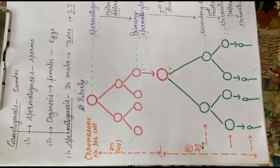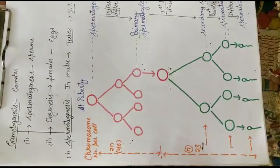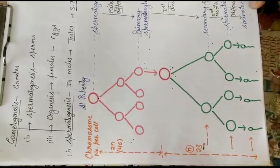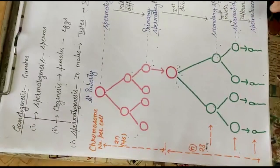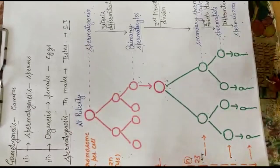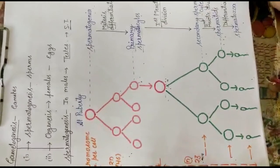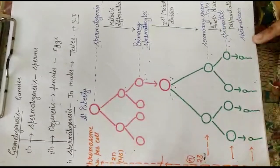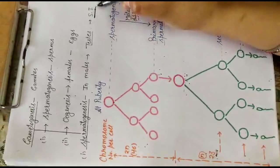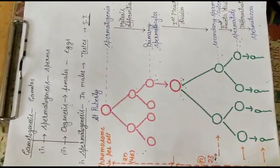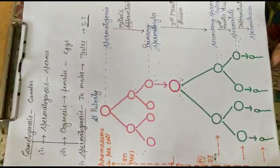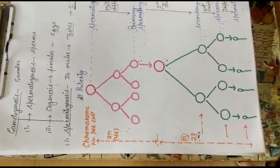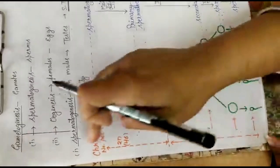In the spermatozoa, the head embeds in the Sertoli cells and takes nutrition from them. The process of transformation of spermatids into spermatozoa is called spermiogenesis. After spermiogenesis, when the sperms are released from the seminiferous tubule, that process is called spermiation. After spermiation, the spermatozoa are found in the lumen of the seminiferous tubule.